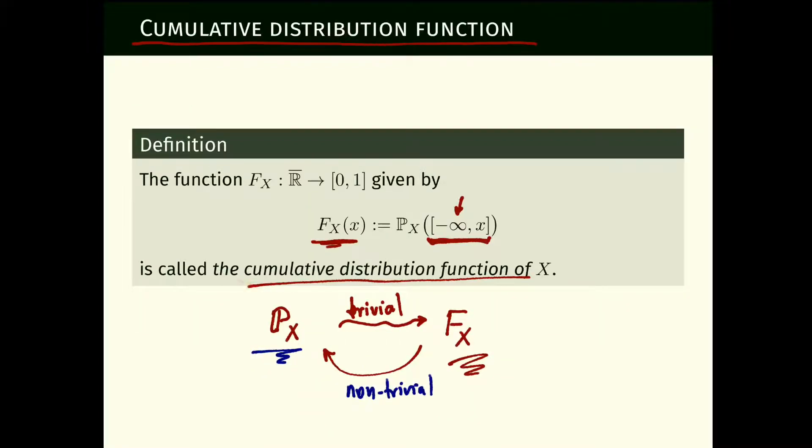We defined the cumulative distribution function of a random variable x as the probability that the random variable takes value less than a certain lowercase x, including minus infinity. Not only does the distribution determine the cumulative distribution function, but the CDF determines the distribution, because we can consider as a pi system events like this, which generates the entire sigma algebra.